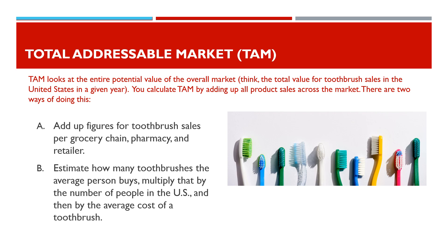The first way is to add up figures for toothbrush sales per grocery chain, pharmacy, and retailer. The second way is to estimate how many toothbrushes the average person buys, multiply that by the number of people in the United States, and then by the average cost of a toothbrush.